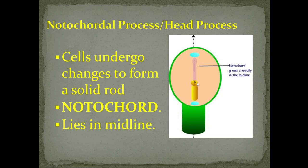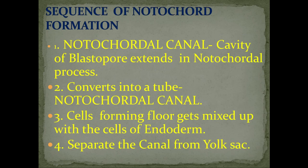The notochordal process or head process is the movement of cells from the primitive knot to the caudal margin of the pro-caudal plate. There is a sequence for notochordal formation. The first step is the formation of the notochordal canal, which is formed in the cavity of the blastopore. A cavity extends into the notochordal process, converting it into a notochordal canal. This canal has a roof and a floor.